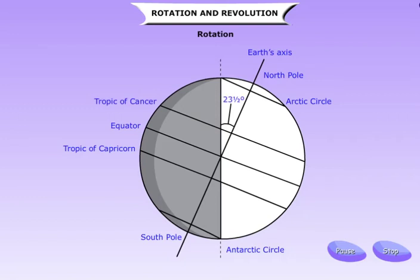The Earth rotates or spins on an imaginary line called its axis. The Earth takes 24 hours to rotate once on its axis. Rotation of the Earth causes day and night.